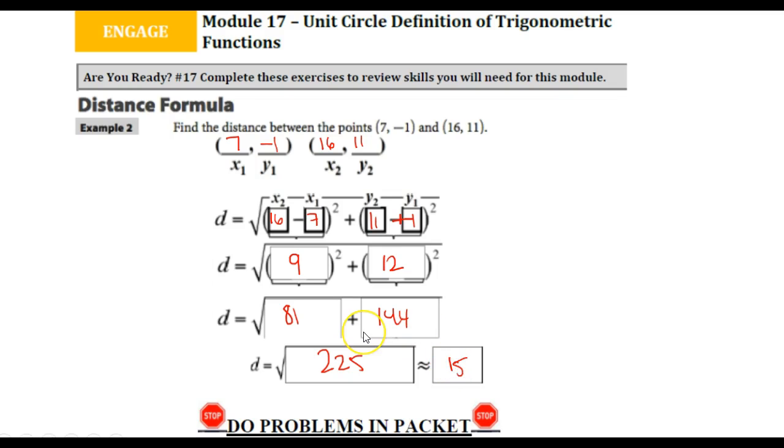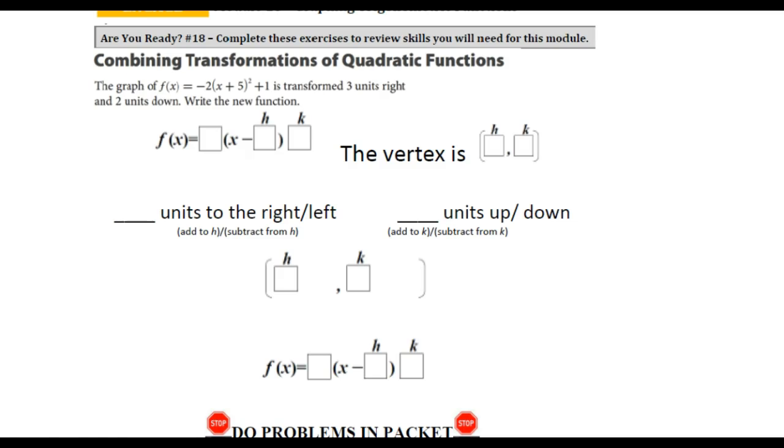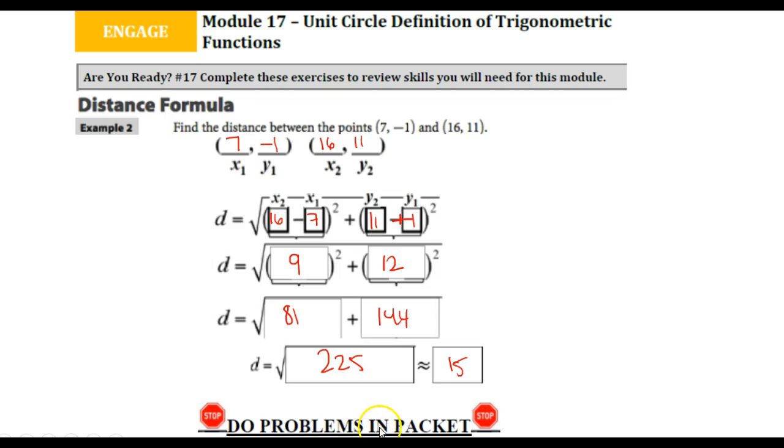Now for the ones in your packet, just like it says here, stop and do the problems in your packet before we move on to the next engage activity. For numbers 4, 5, and 6 in your packet, you may get whole numbers or you may get decimals.